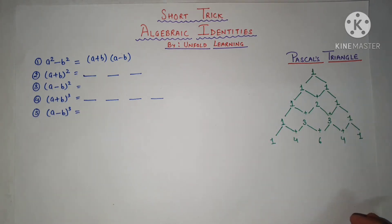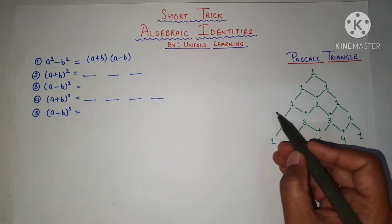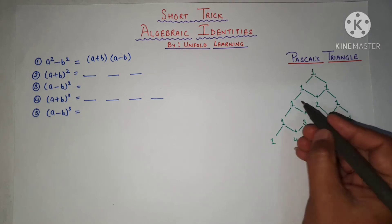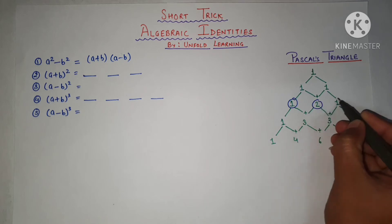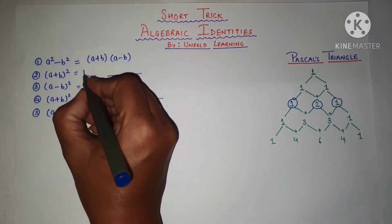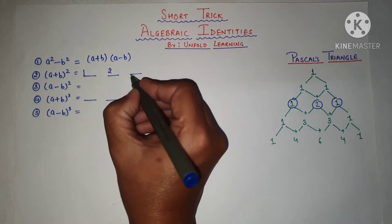So let us start with (a + b) whole square. First of all, we will write the coefficients from Pascal's Triangle. We have 3 terms, so the coefficients are 1, 2, and 1. I will be writing here 1, 2, and 1.